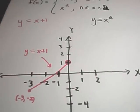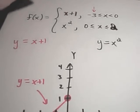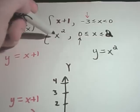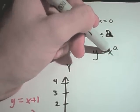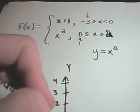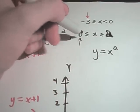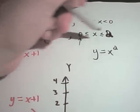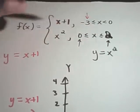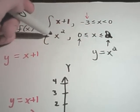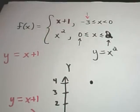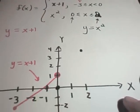Now we do the same thing to graph y equals x squared. Plugging 0 in for x gives y equals 0, so 0 comma 0 is on the graph, and since it's less than or equal to, we use a solid dot. For the endpoint at x equals 2, two squared is 4, so 2 comma 4 is on the graph — also a solid dot since it's less than or equal to.